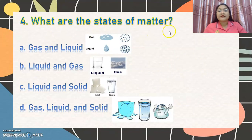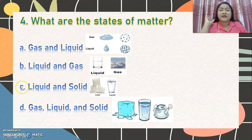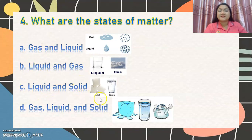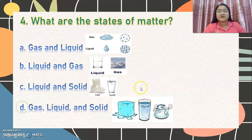Number 4: what are the states of matter? Letter A, gas and liquid. Letter B, liquid and gas. Letter C, liquid and solid. Or letter D, gas, liquid and solid. States of matter — we have 3. The correct answer is letter D. The states of matter are gas, liquid and solid. Very good.